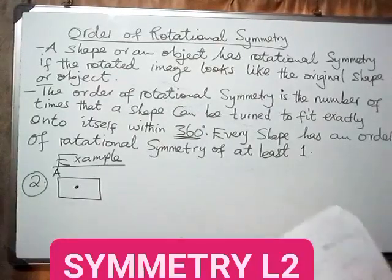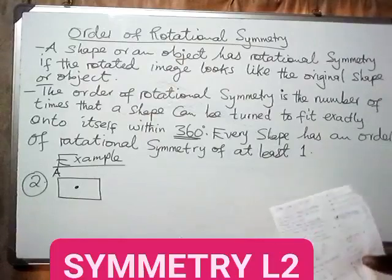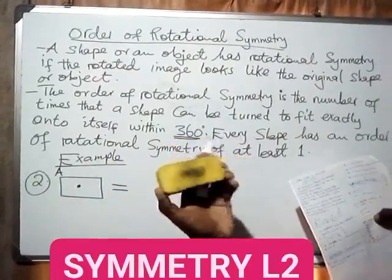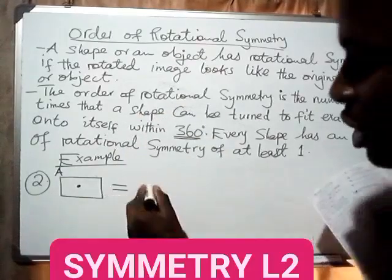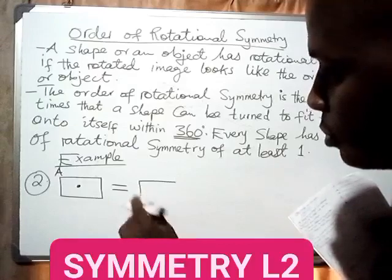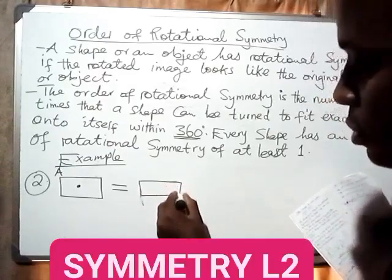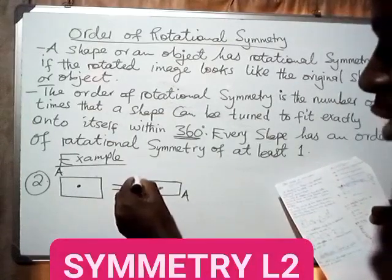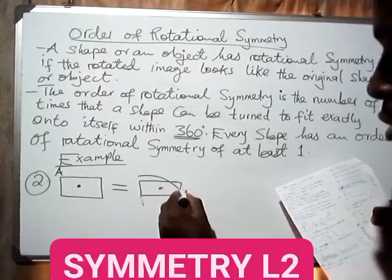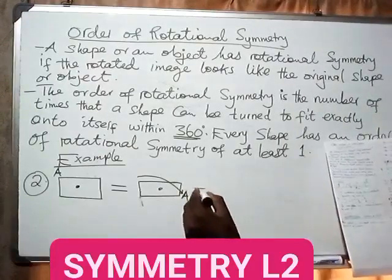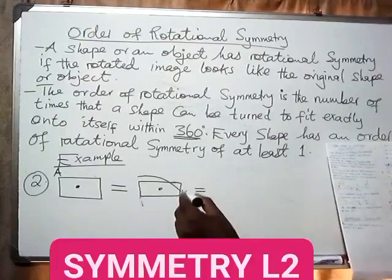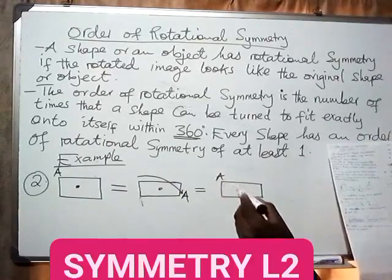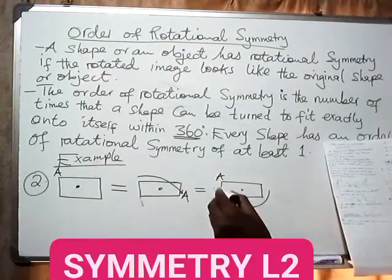Example number two: we have a rectangle. How will this rectangle be rotated? Point A starts on one side and comes to the other side — that is the first rotation. From there we rotate again, and A comes back to its original position. So the rectangle has completed its full rotation.